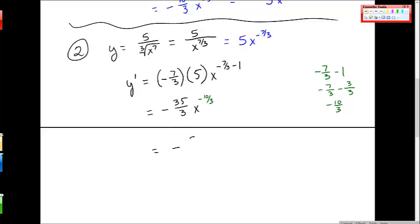Another form of this final answer might be to bring this x into the denominator. It might be to turn it back into a radical: 35 over 3, cubed root of x to the 10th.